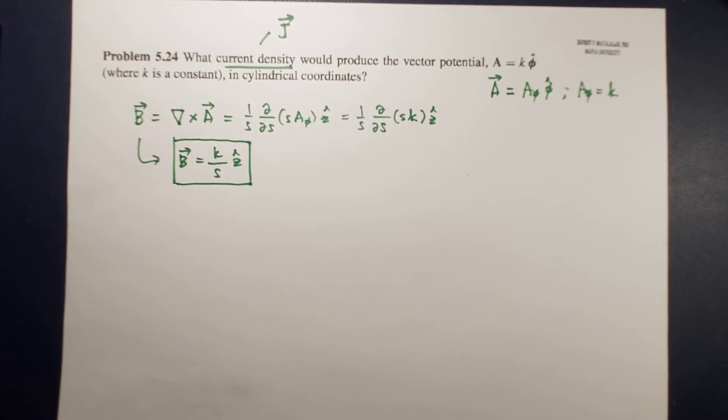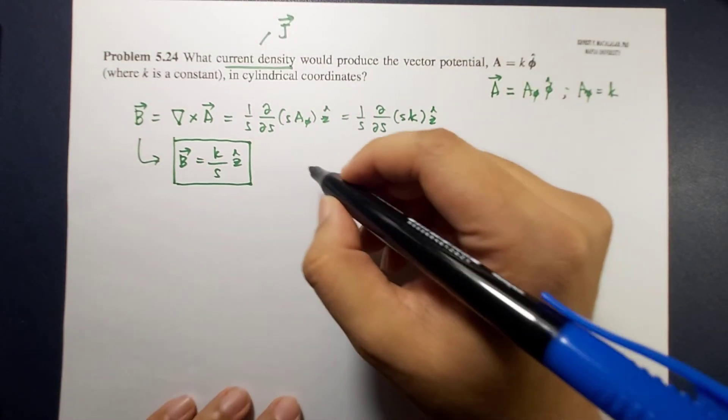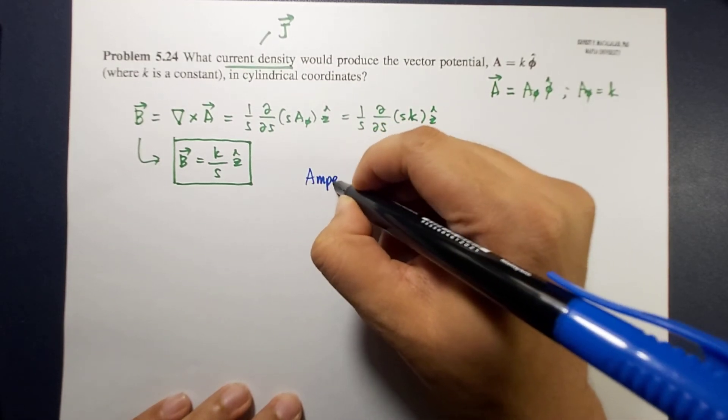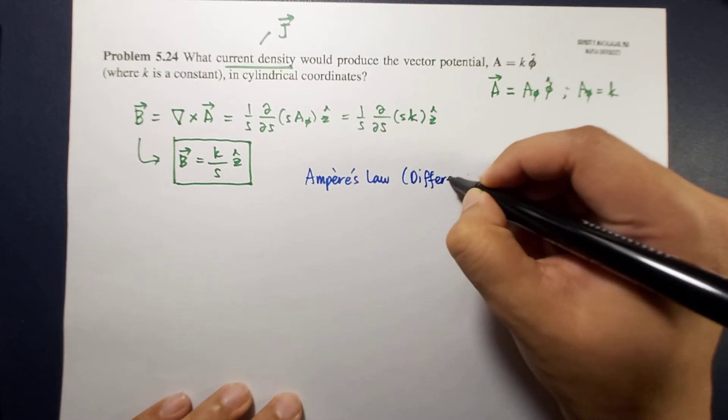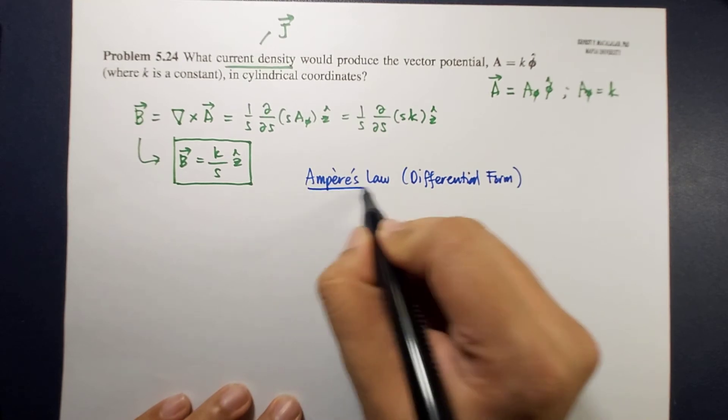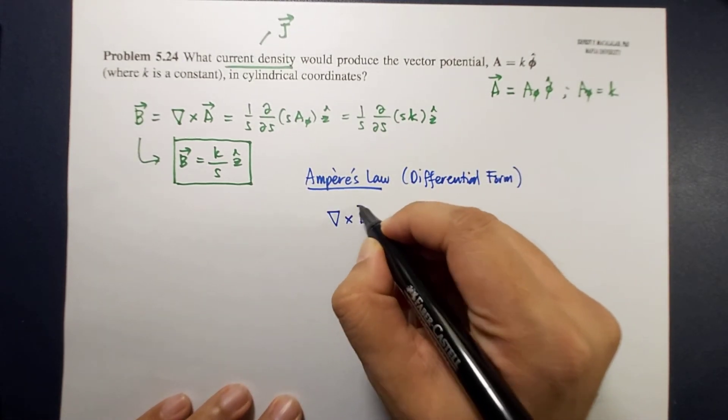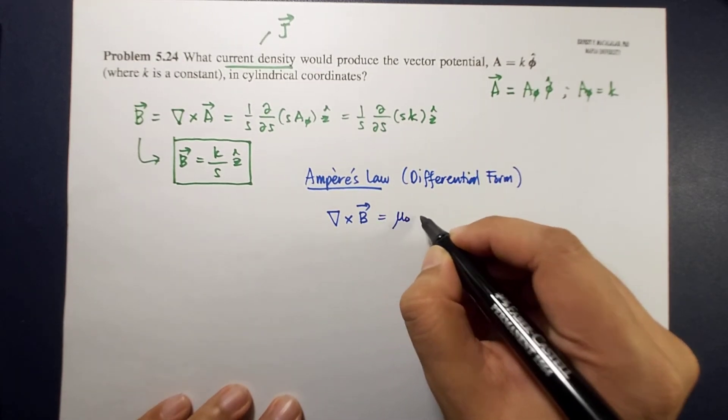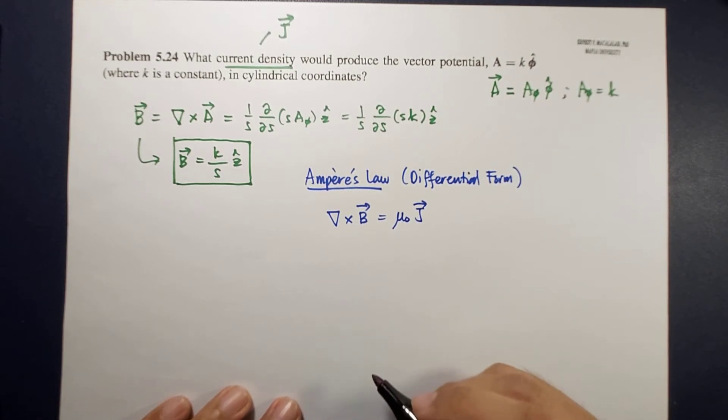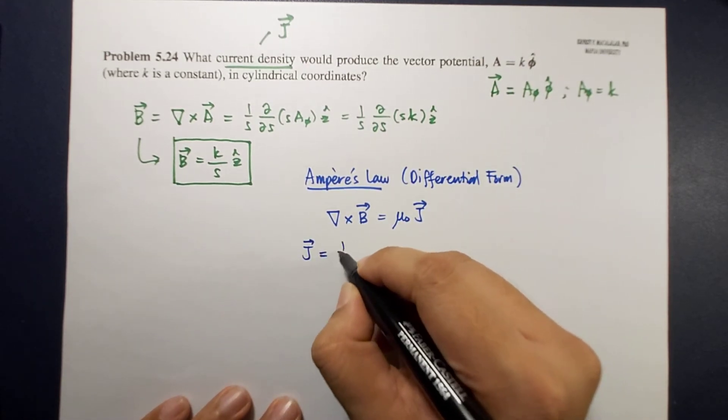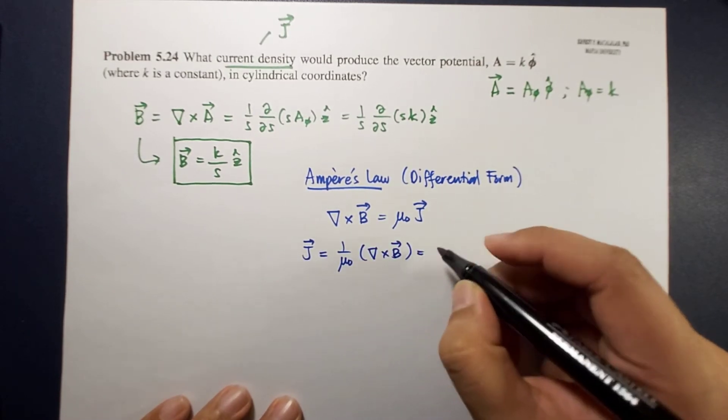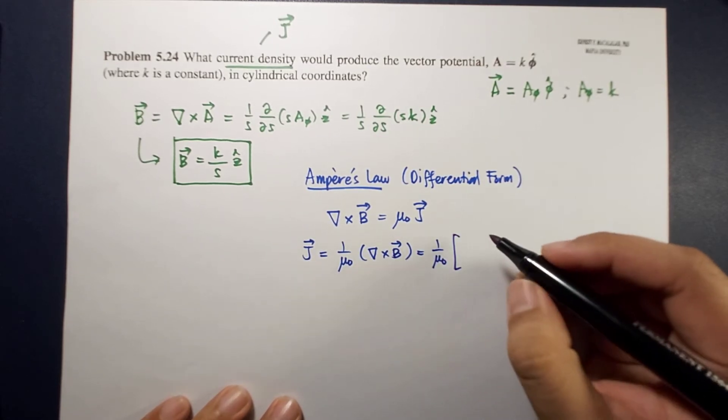The relationship between the current density j and the magnetic field is given by the differential form of Ampere's law. The differential form of Ampere's law is curl of B equals mu naught j. Since we're talking about cylindrical coordinate system, this curl will be in cylindrical coordinate system. Following this equation, we now have j equals 1 over mu naught times the curl of B, which is equal to 1 over mu naught times what?